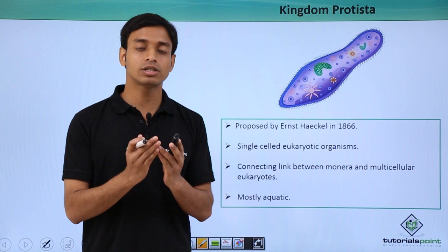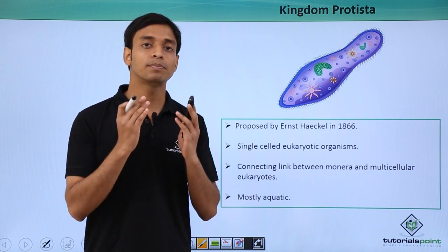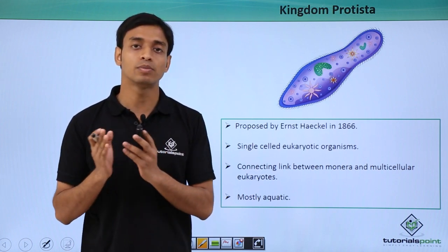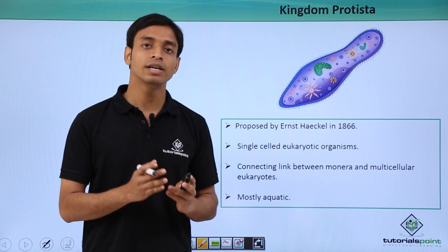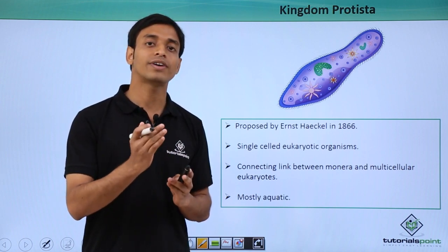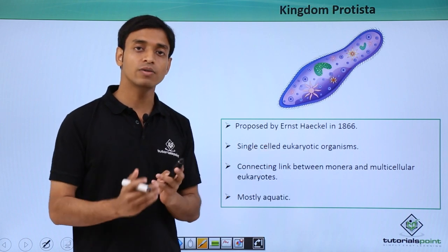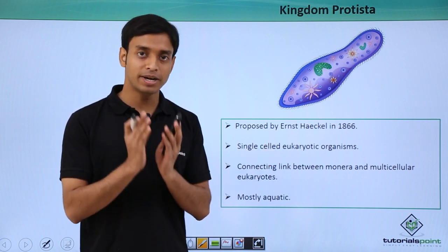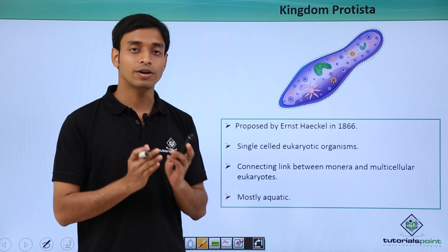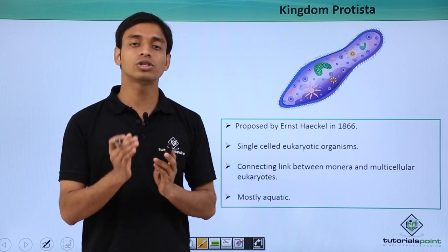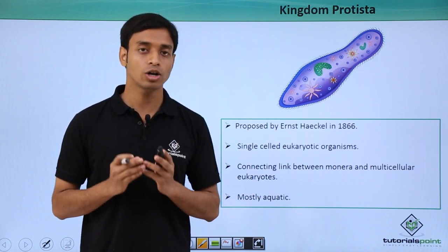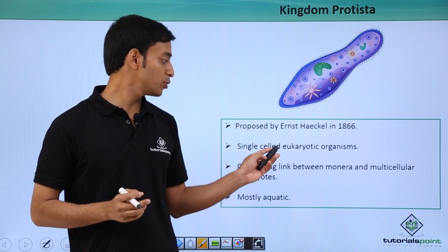Before this, we discussed prokaryotes or single-celled prokaryotes which were included in the kingdom Monera of the five kingdom classification. Now after prokaryotes, we come to eukaryotes, but we include Protista which includes only those single-celled eukaryotic organisms. This is Kingdom Protista.